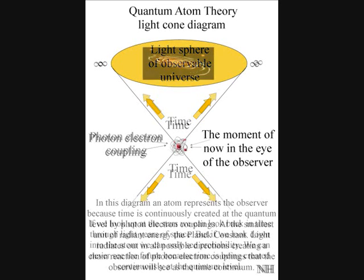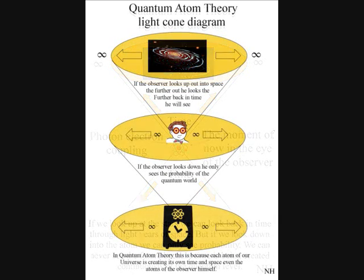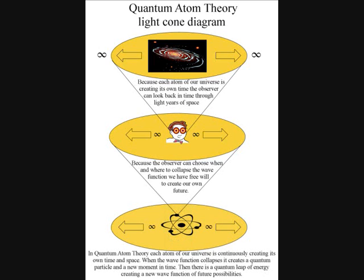Therefore, if the observer looks up, he can see back in time through light years of space. But if he looks down into the quantum world of the atom, he can only see probability. The probability of the uncertainty principle is the same probability that the observer will have in any future event.